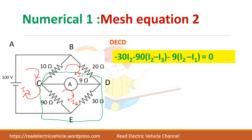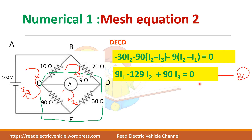When writing for the second loop, always take that loop current as the first term. So if writing for the second loop, write I2 minus I1 for the shared branch — whereas in the first loop equation you wrote I1 minus I2. Whichever loop you are writing for, take that loop's current as the first part. Simplify to get the second equation.